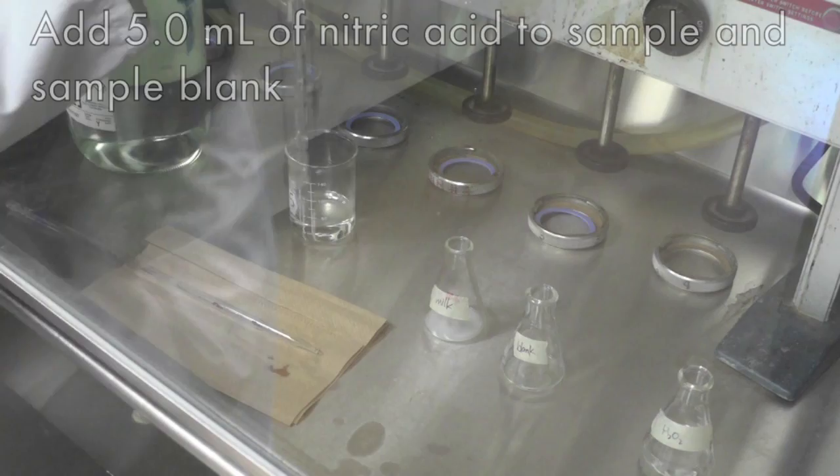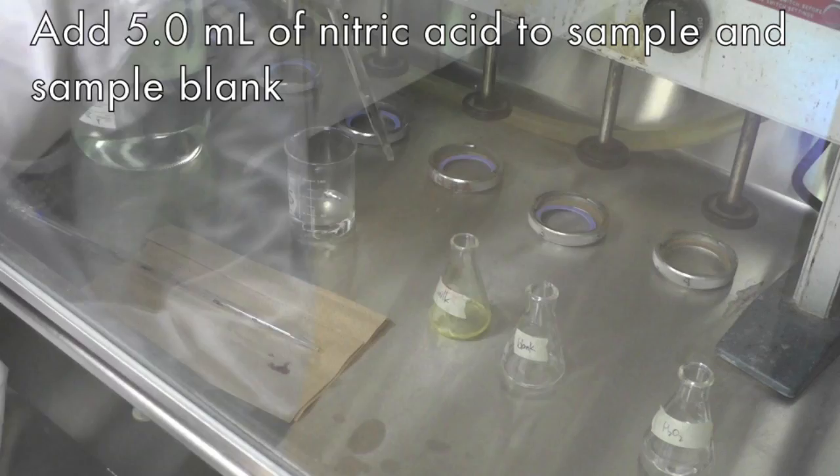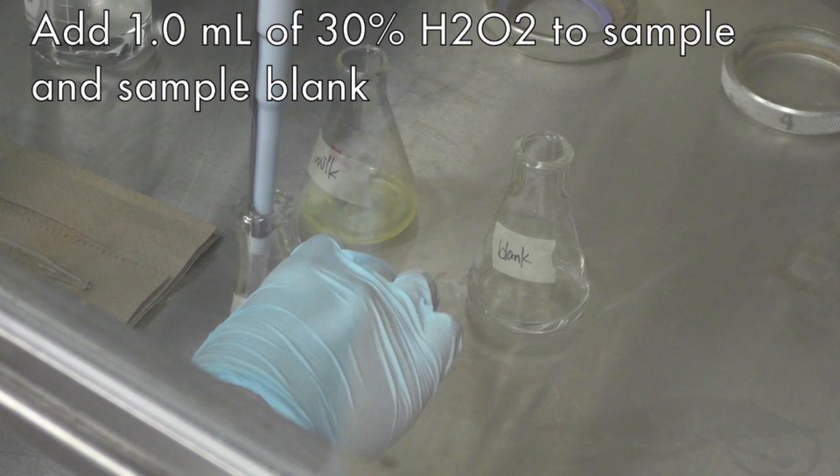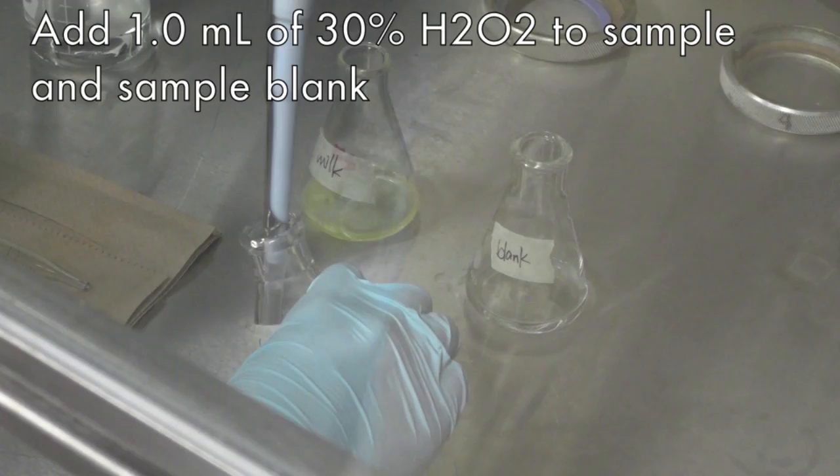Inside the fume hood, add 5.0 ml of concentrated nitric acid and 1.0 ml of 30% hydrogen peroxide to each sample and sample blank. Please note that the fumes created by the reaction will be very toxic.